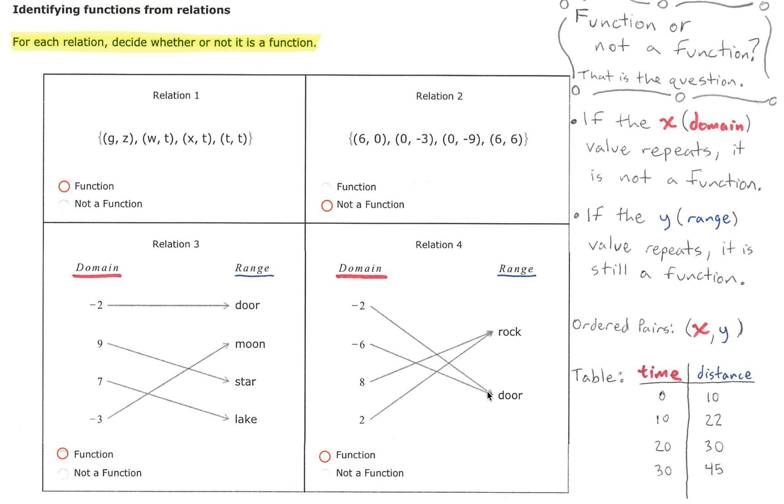Only one arrow comes out of 8, pointing at rock. Only one value comes out of 2, pointing at rock. It's okay for more than one domain value to point at the same value in the range but the important thing here is that each one of these values had only one arrow coming out of them. Therefore this is a function.